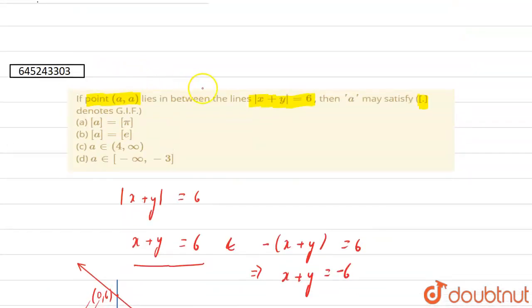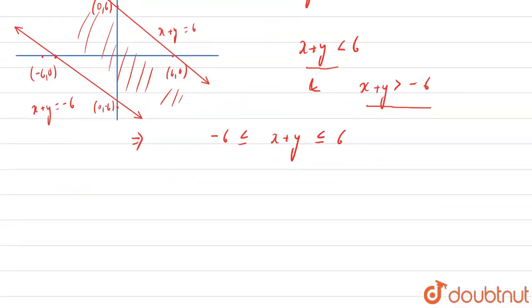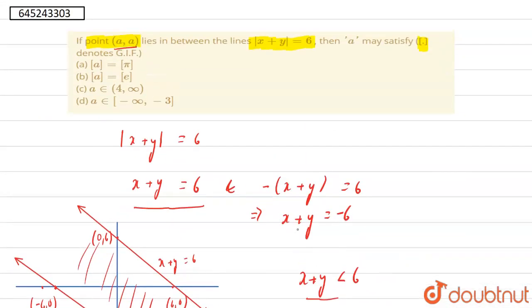Now they said that (A,A) is satisfied this equation. So if it is satisfied then we can write it as minus 6 and this becomes A plus A and this is 6. So this becomes minus 6 < 2A < 6. So this is minus 3 < A < 3. So our A belongs to the interval minus 3 to 3.